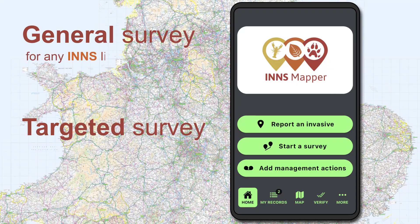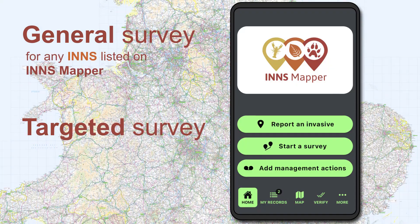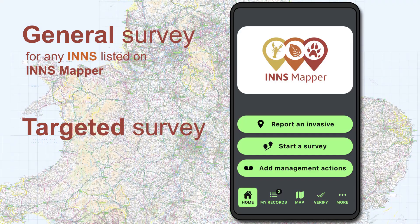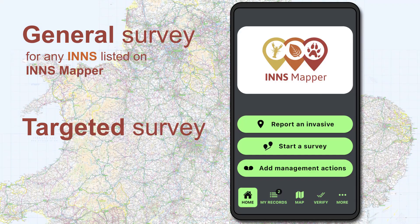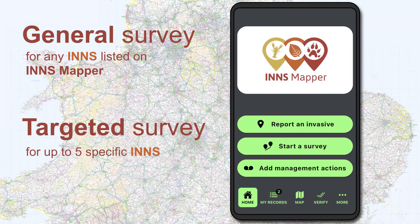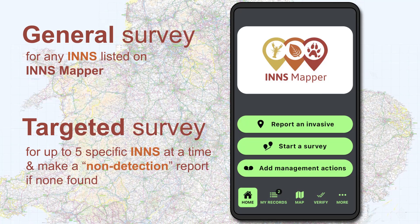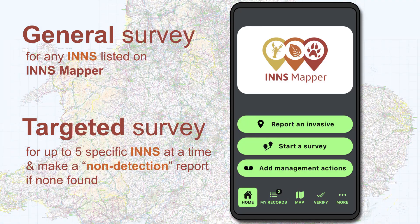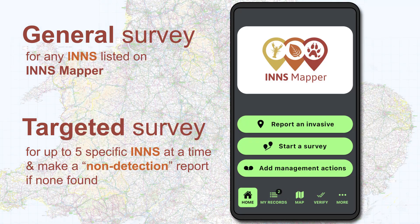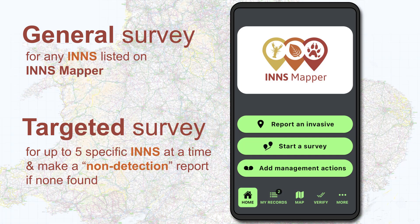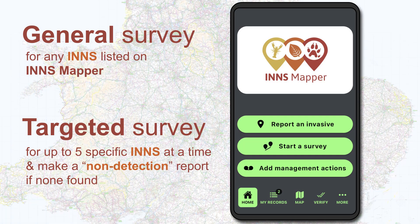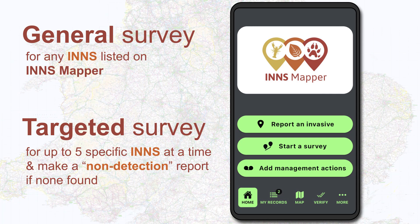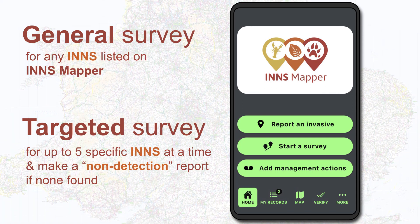A general survey provides data on where you have surveyed for any of the species listed on INS Mapper. A targeted survey is where you have surveyed for up to five specific INS at a time. This tells us where specific survey effort has been made and allows for non-detection reports when you survey but find no INS to report.